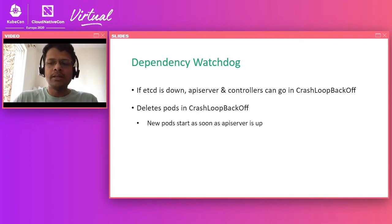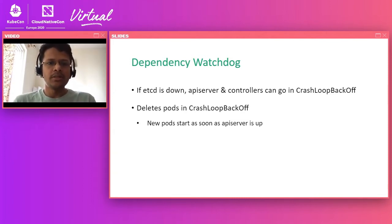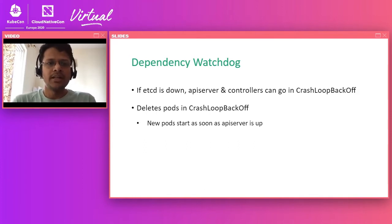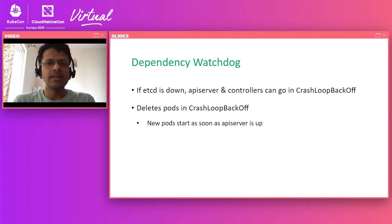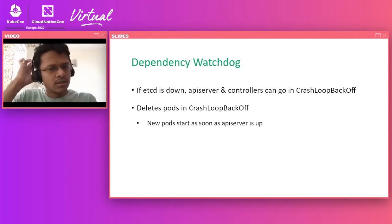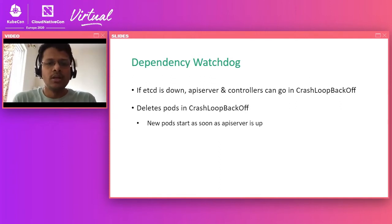To keep the control plane up and healthy with minimal downtime, we depend on a component called Dependency Watchdog. When etcd or the API server is down, other controllers in the control plane can go into exponential crash loop backoff, and when the API server comes back up it can take a long time for those controller pods to start again. Dependency Watchdog keeps a watch on the etcd endpoints for availability, and also watches the control plane pods going into crash loop backoff. If etcd is down — potentially causing controller manager pods to be down — it deletes those pods so a new pod is immediately created, which is not in exponential backoff anymore and can start as soon as etcd and the API server are back up.